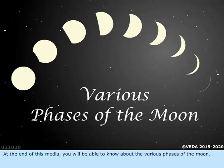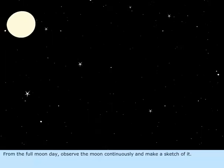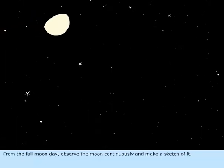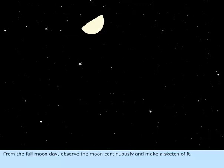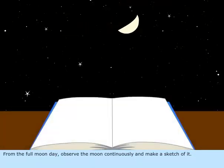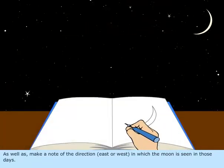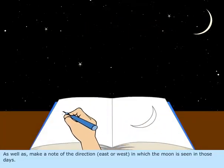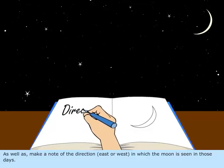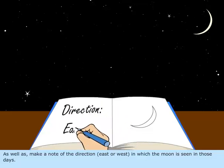At the end of this media, you will be able to know about the various phases of the moon. From the full moon day, observe the moon continuously and make a sketch of it, as well as a note of the direction, east or west, in which the moon is seen in those days.